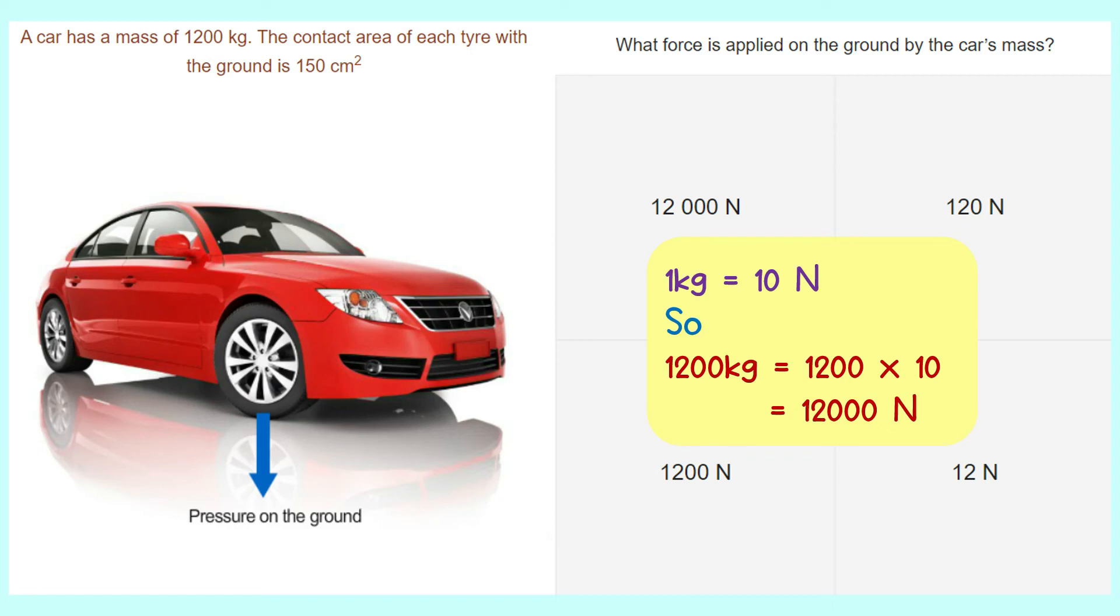It is already provided that the mass of the car is 1,200 kilograms. To convert kilogram into Newton, you have to times by 10. So, 1,200 kilograms times 10 equals to 12,000 Newton. So, the answer is 12,000 Newton.